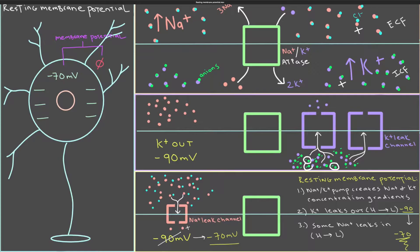Its concentration is still really high on the inside, and so it would want to leave by the concentration gradient. But for some reason it knows that at minus 90 there's something special about this number, and potassium will just stop leaving the cell when the membrane potential gets to minus 90. What is special about this minus 90 number?